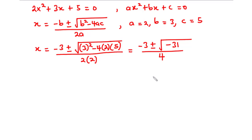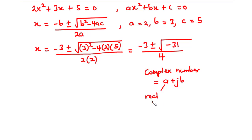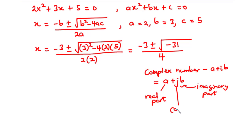This is the point where we introduce the concept of complex numbers. A complex number is a number written in the form a plus jb, where a is the real part and jb is the imaginary part. In other textbooks, it can be written as a plus ib. However, in engineering we denote currents with i, so instead we write a plus jb. This is called the Cartesian complex number, and the imaginary value j is equal to the square root of negative 1.